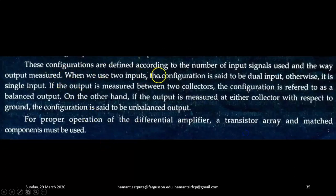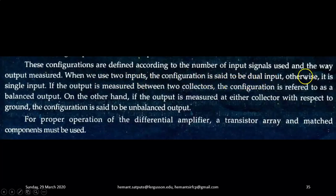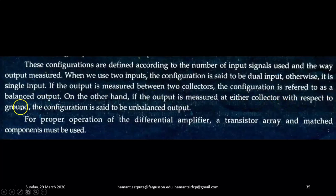These configurations are defined according to the number of input signals used and the way the output is measured. When we use two inputs, the configuration is said to be dual input; otherwise it is single input. If the output is measured between two collectors, the configuration is referred to as balanced output. If the output is measured at either collector with respect to ground, it is said to be unbalanced output.